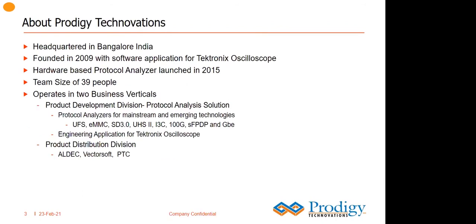Prodigy is based out of Bangalore, India — our only location. We started in 2009 developing application software for Tektronix oscilloscopes. While discussing with customers, we realized scope-based protocol analysis tools weren't providing in-depth information. Customers wanted to capture data for longer periods and analyze it. In 2014 we started developing an eMMC protocol analyzer and launched it in 2015. It was well-received and that began our journey developing standalone protocol analyzers.